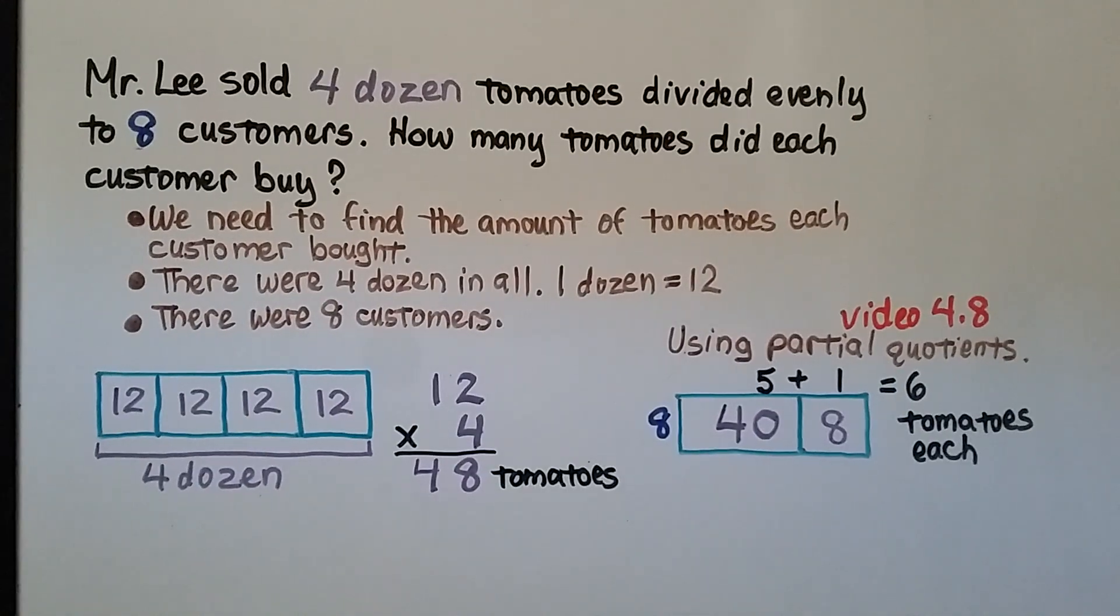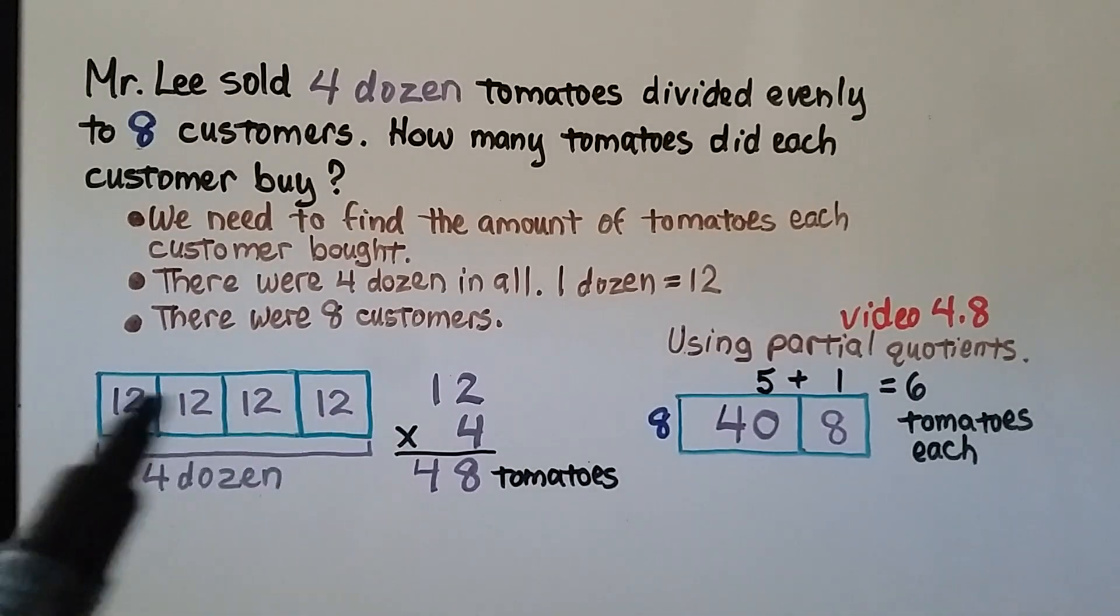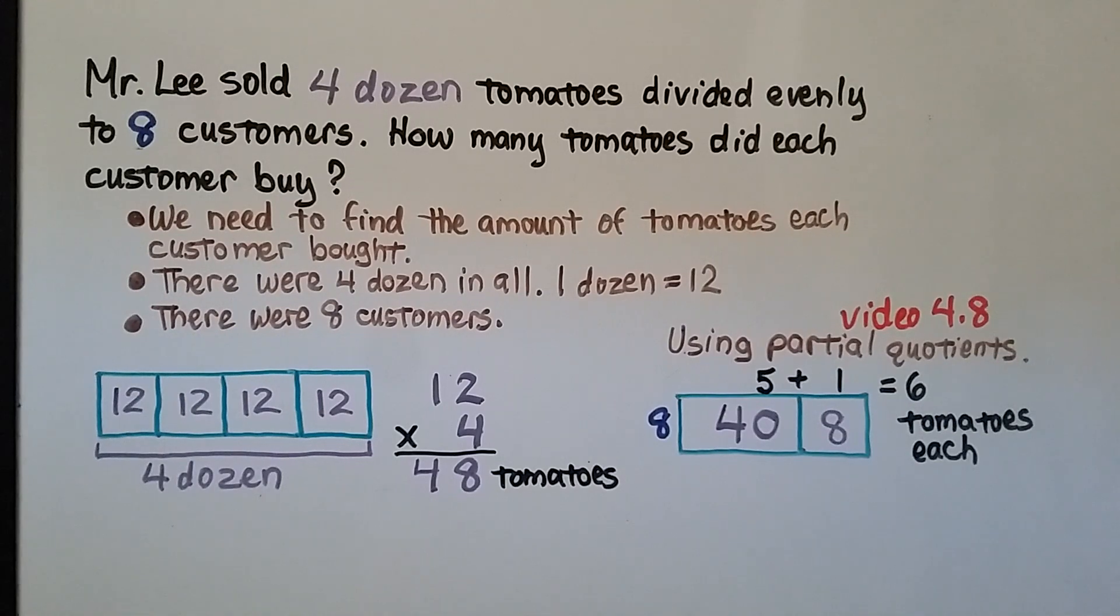Mr. Lee sold 4 dozen tomatoes divided evenly to 8 customers. How many tomatoes did each customer buy? So we need to find the amount of tomatoes each customer bought. There were 4 dozen in all. 1 dozen is equal to 12. And there were 8 customers. So there were 4 dozen. And if 1 dozen is 12, that means there were 48 tomatoes.